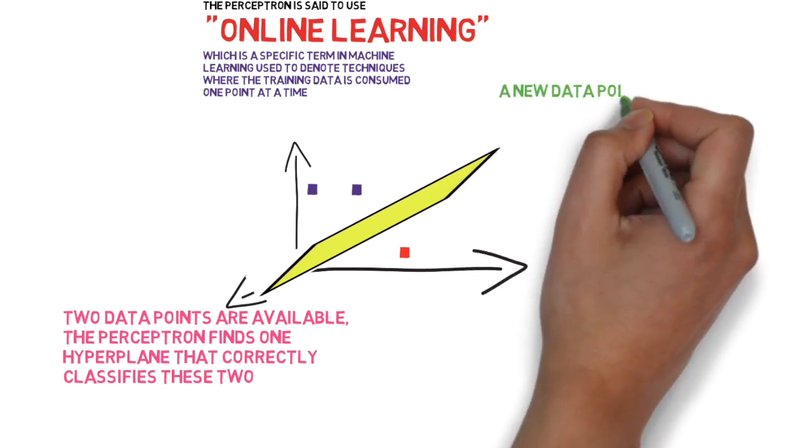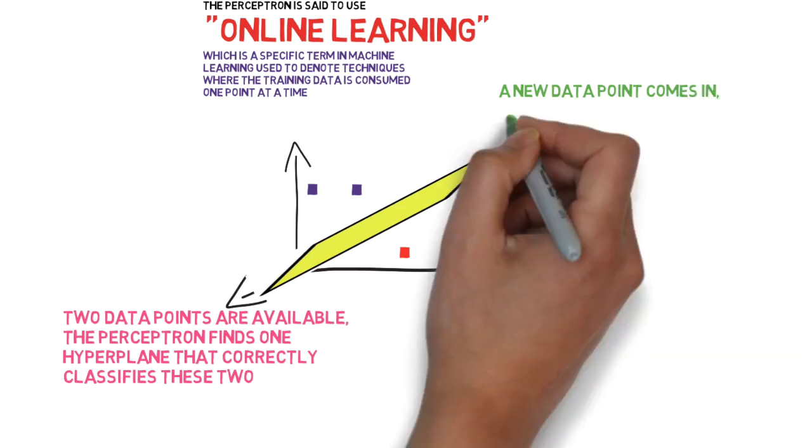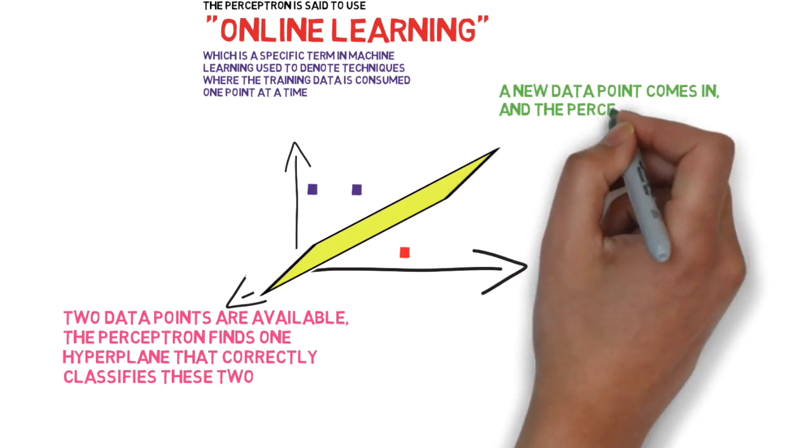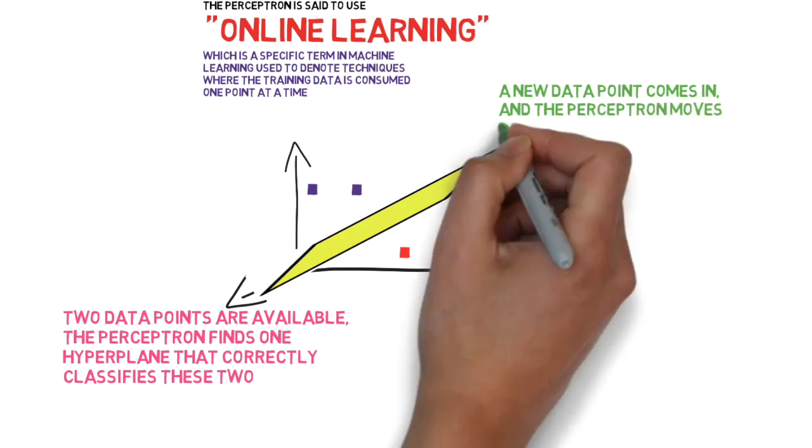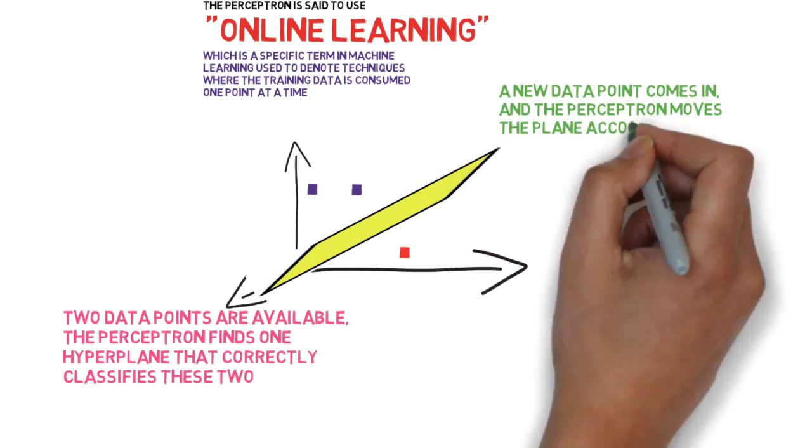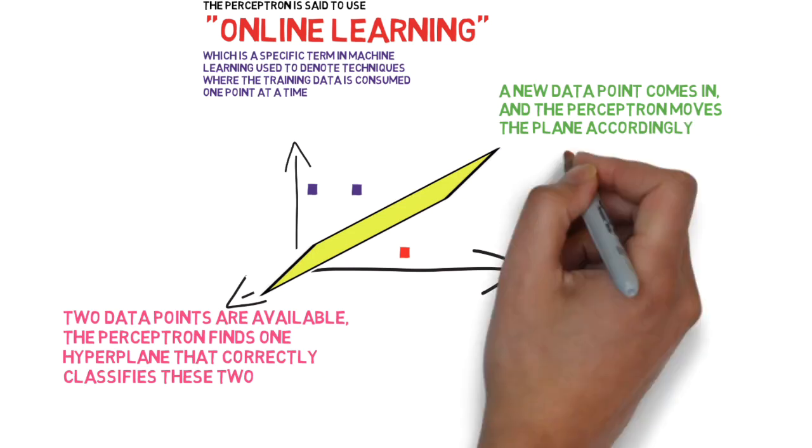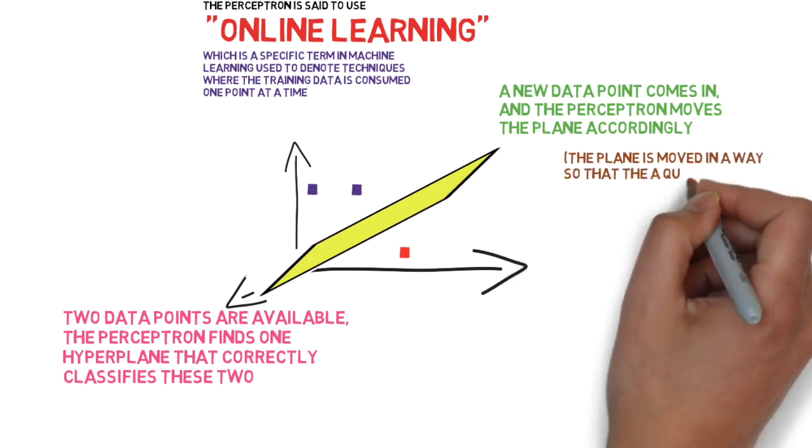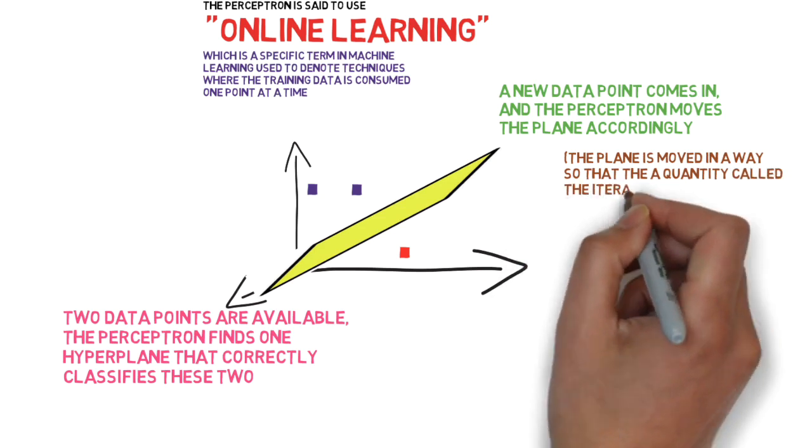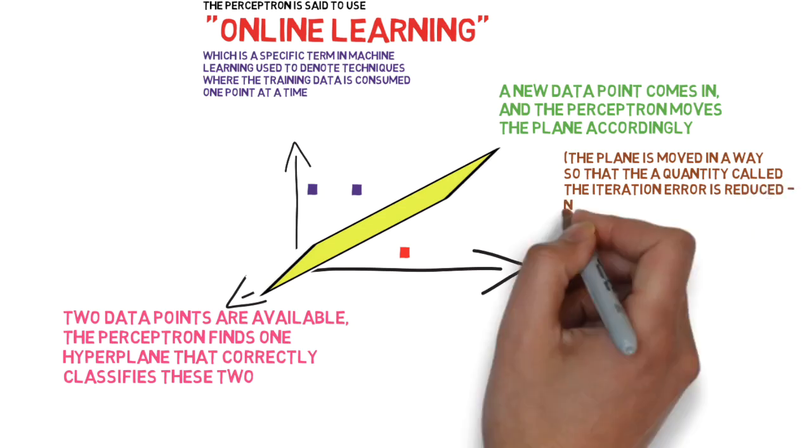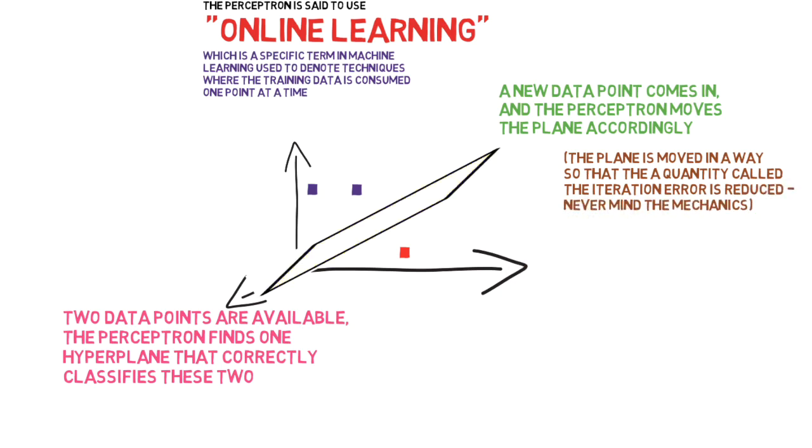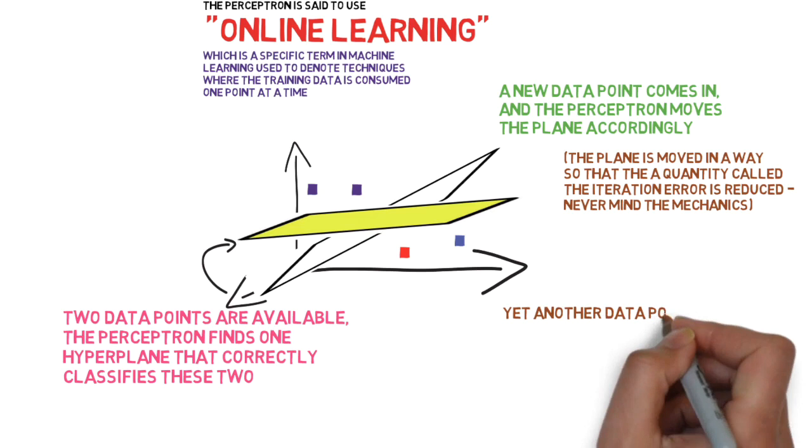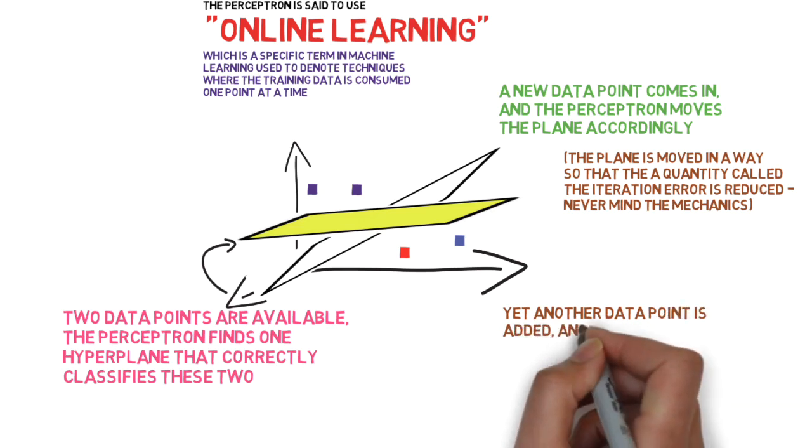Now let's say a new data point comes in. So this is the next point from the training data set. The perceptron just moves the hyperplane accordingly. Now it picks the hyperplane that would separate these sets of points cleanly. Now the plane is moved in a way such that a measure or quantity called the iteration error is minimized. We'll not go into the mechanics of what the iteration error is and how it actually does this.